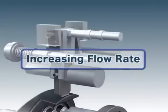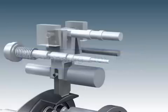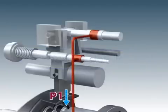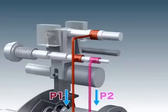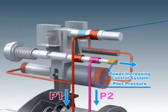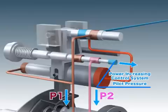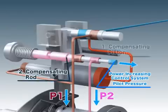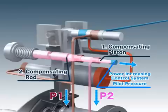Next, we will explain how the regulator increases the flow rate. When the delivery pressure of the pump P1, or of a companion pump P2 decreases, or when the pilot pressure is released by the power-increasing control system, the compensating rod and piston are pushed back by their springs.